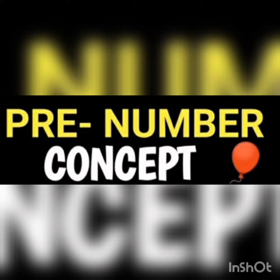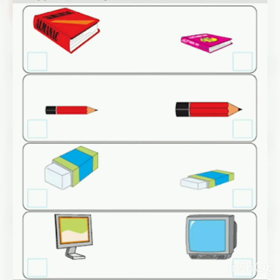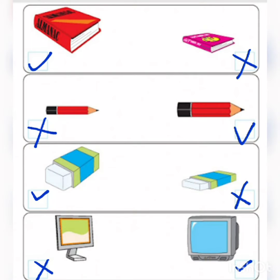Good morning everyone! Today we are going to do pre-number concepts. The first is thick and thin. Thick and thin is based on the thickness of a thing. Things having more thickness are the thick ones, and things with less thickness are the thin ones. In these images, I have ticked the things which are thick and crossed the things which are thin.